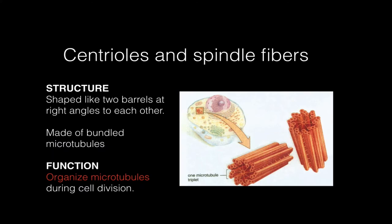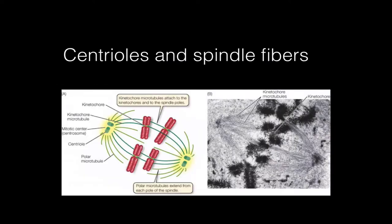The cytoskeleton is responsible for maintaining and changing the shape of animal cells. The spindle fiber and centrioles are built from microtubules. They're inside of animal cells, and their function is to organize and move the chromosomes around during cell division. The microtubules organized by the centrioles attach to the chromosomes and cause them to line up and move in a process called mitosis.